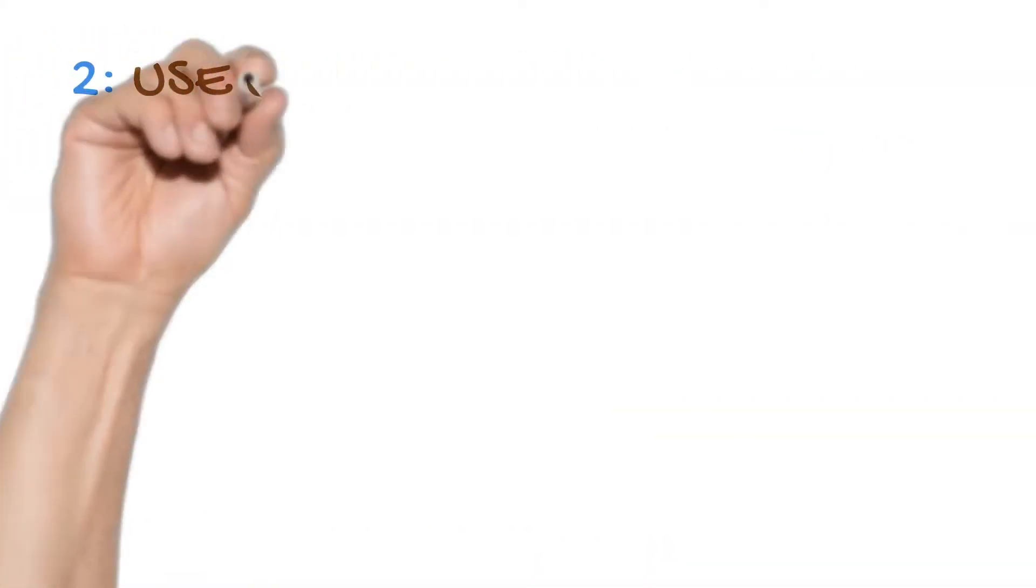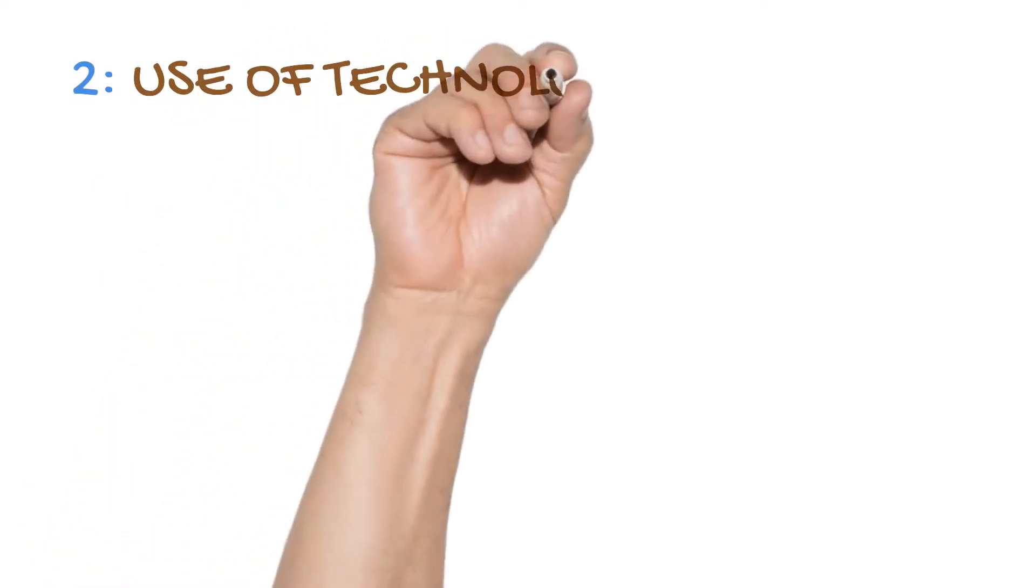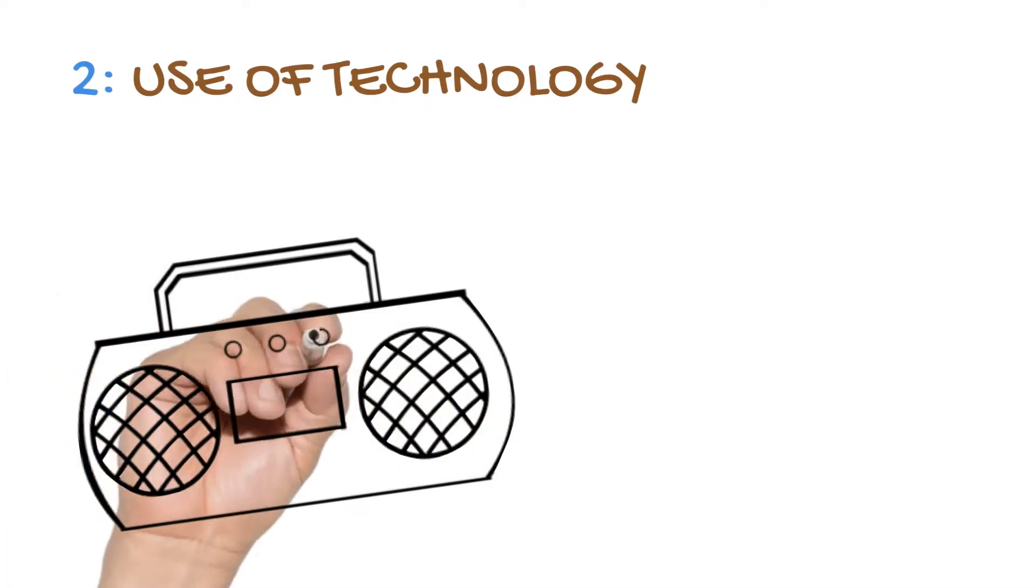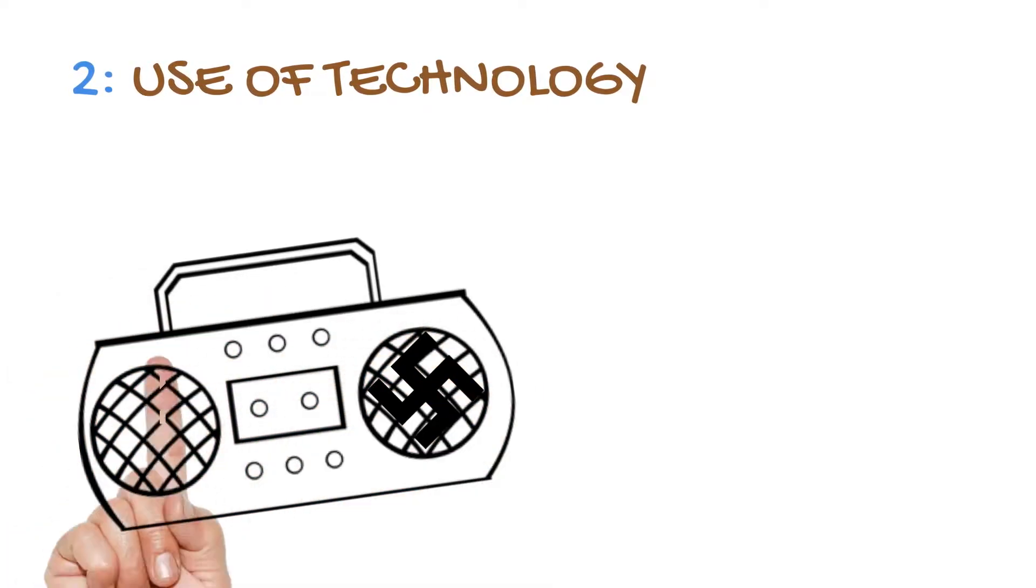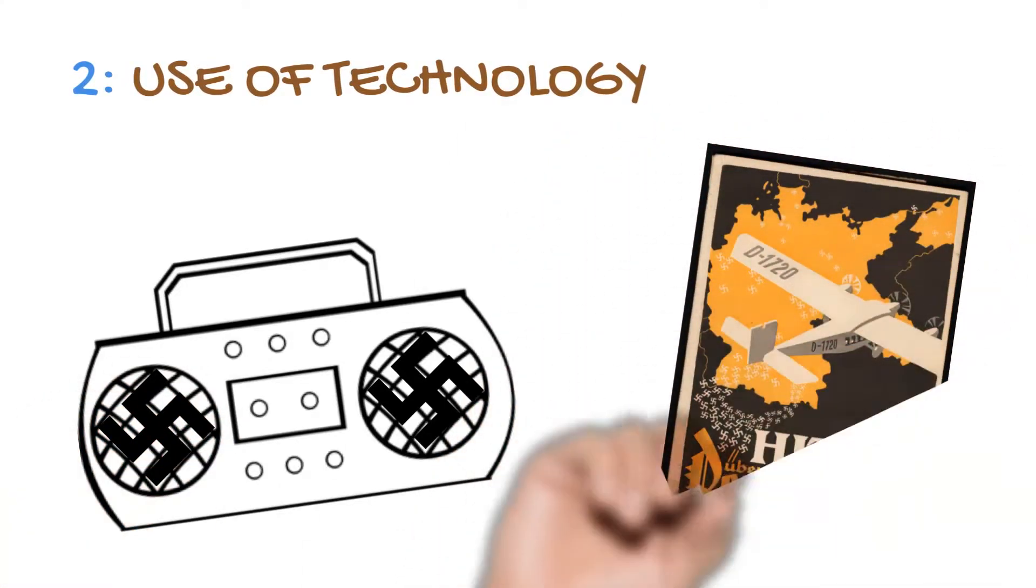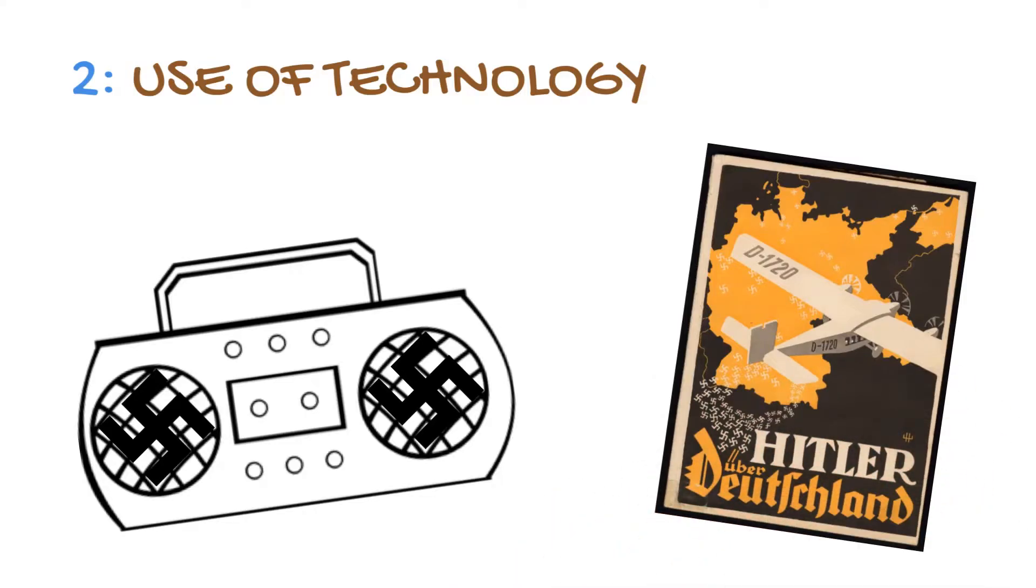Partly due to the financial support the Nazis had from key German businessmen, they were able to utilize new technology, such as the radio, to promote their messages to ever greater numbers of people. Hitler's use of aeroplanes to crisscross Germany during election cycles was also crucial to Nazi support.